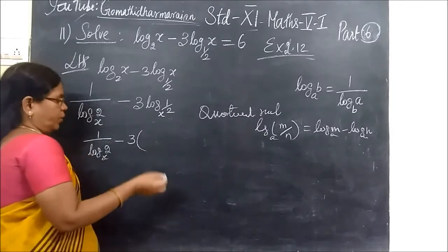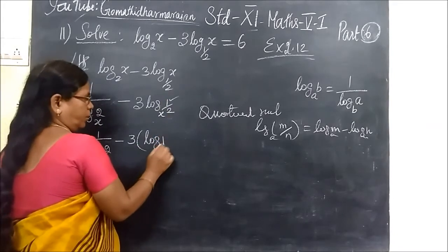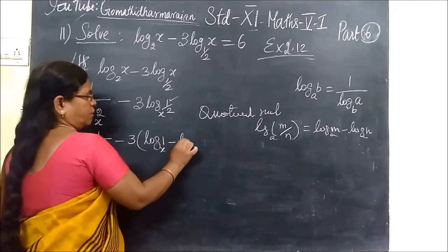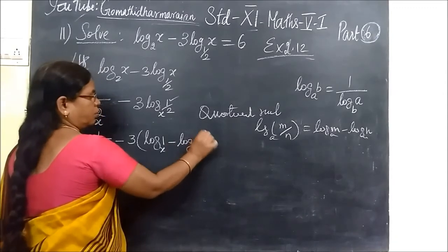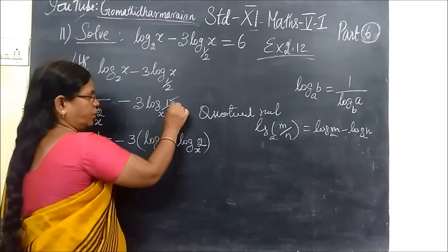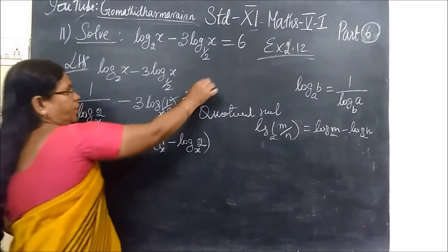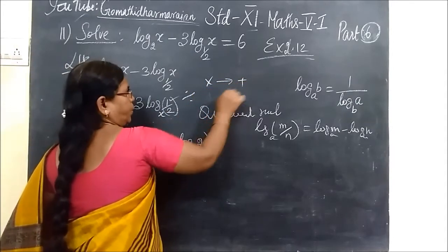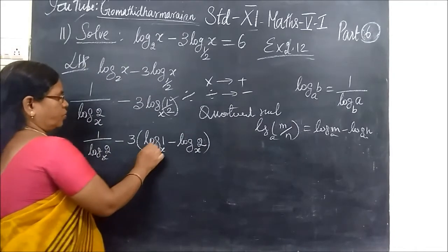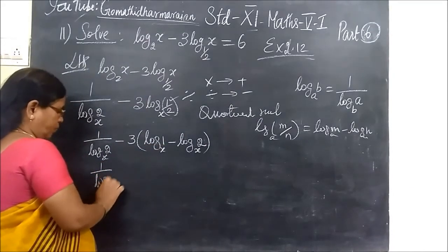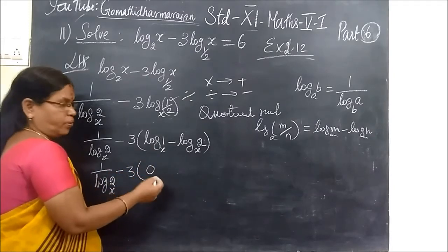Here, you write upon numerator, log 1, then minus log N. Log M minus log N. You can divide it. Divide word up, you are using minus. Multiply word up, you are using plus. So, for divide minus, for multiply plus. So, we know log 1 equal to 0. Log 2 to the base x. Log 1 is what? 0.